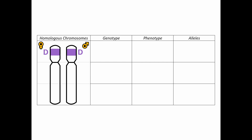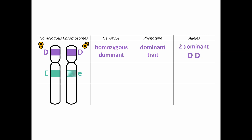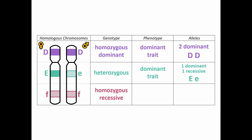If we look at an individual who is capital D, capital D — the same alleles for both, shown in capital letters to indicate dominant alleles — this would be a homozygous dominant genotype showing the dominant trait. If we have capital E, lowercase e, they're different alleles, so we are heterozygous. We have a dominant allele so we show the dominant trait. And if we are lowercase f, lowercase f, they're both the same allele, so homozygous recessive — since we have two recessive alleles, we show the recessive trait.